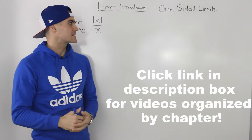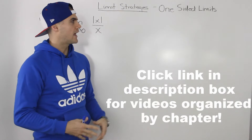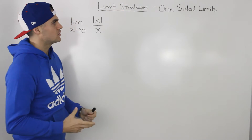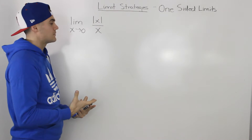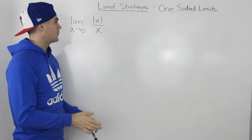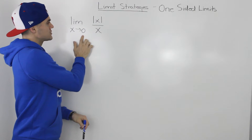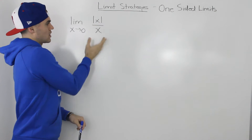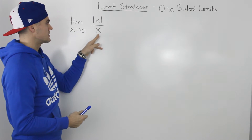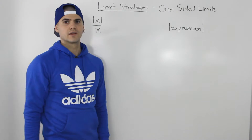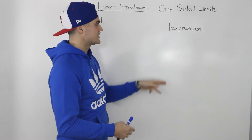Moving on to the next strategy for solving limits, we're going to deal with one-sided limits. This strategy is used usually whenever you see an absolute value in a limit. Notice in this limit how we have the absolute value of x — we have the limit as x goes to zero of the absolute value of x all over x. Notice how we can't make a direct substitution because then the denominator would be zero.